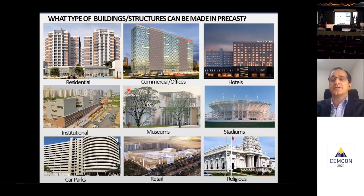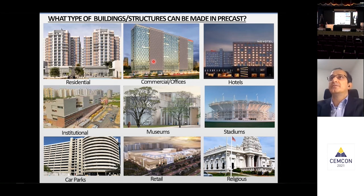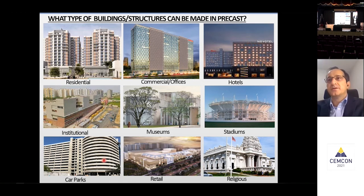What type of buildings or structures can be made in precast? Almost all that we can think of. If we categorize: residential buildings — tall and low-rise — all can be made in precast. There are some examples on the screen — these are live projects already executed in India. Commercial offices, hotels, institutional buildings, schools, museums, stadiums, car parks, retail buildings, mixed-use or shopping malls, and religious buildings. This is a precast Hindu temple. All the structures you see on the screen are in India.